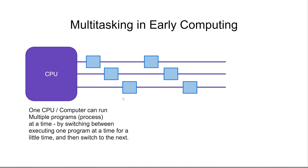To solve this problem, multitasking was invented. Multitasking basically means that computers can now run more than one application at the same time. But since the CPU can only execute one program at a time, it solves this by executing one application for a little bit of time, then switching to another and executing that for a little bit, then switching back and repeating. This way, it appears to the user as if all applications are running at the same time, even though they are actually only running one at a time — the switches are so fast that the user cannot feel the difference.